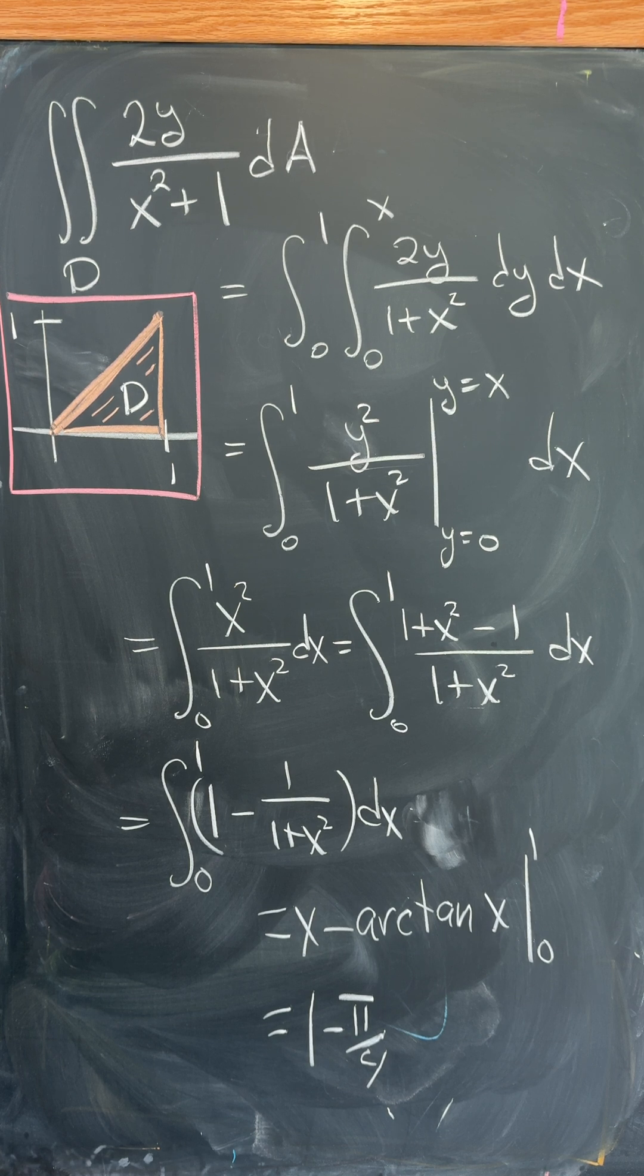evaluated from 0 to 1 gives us 1 minus pi over 4.